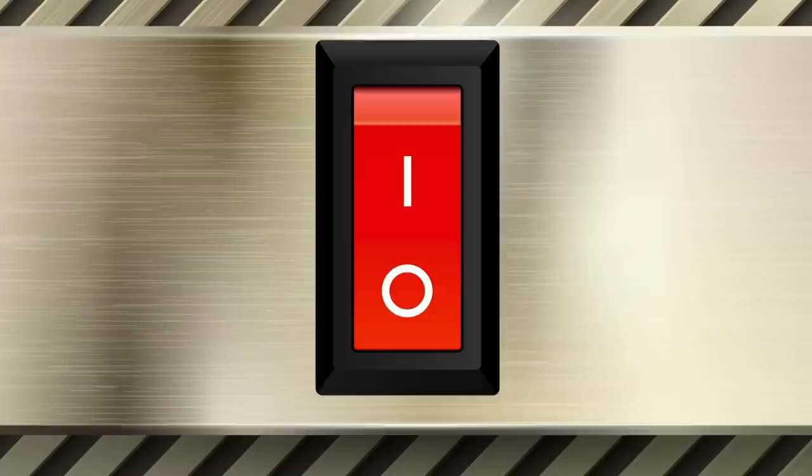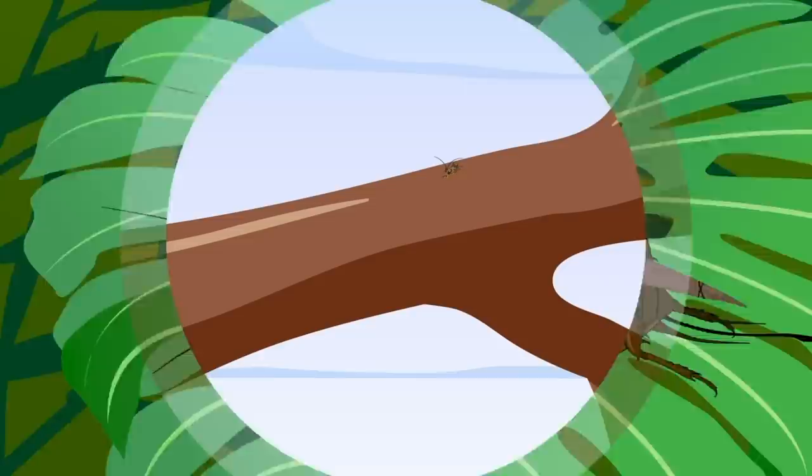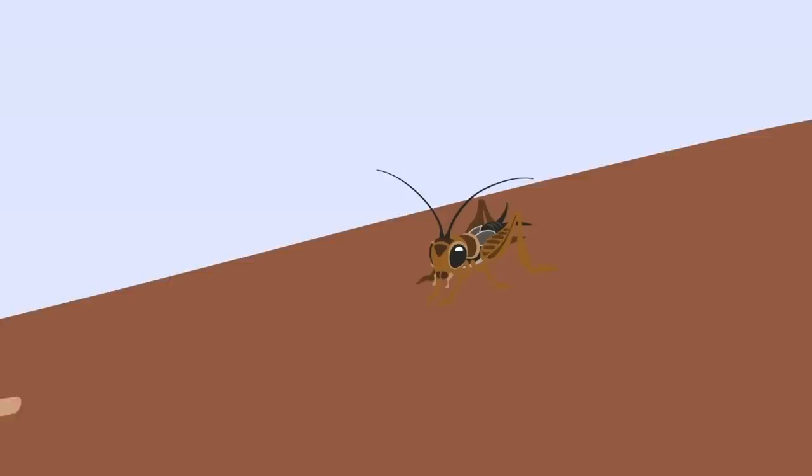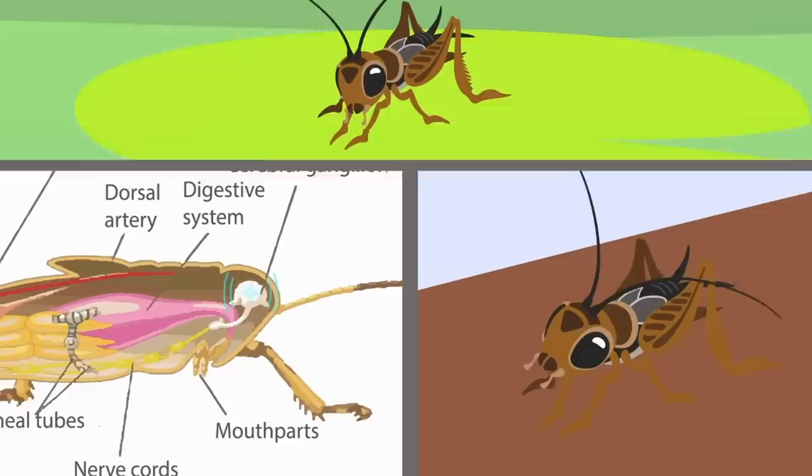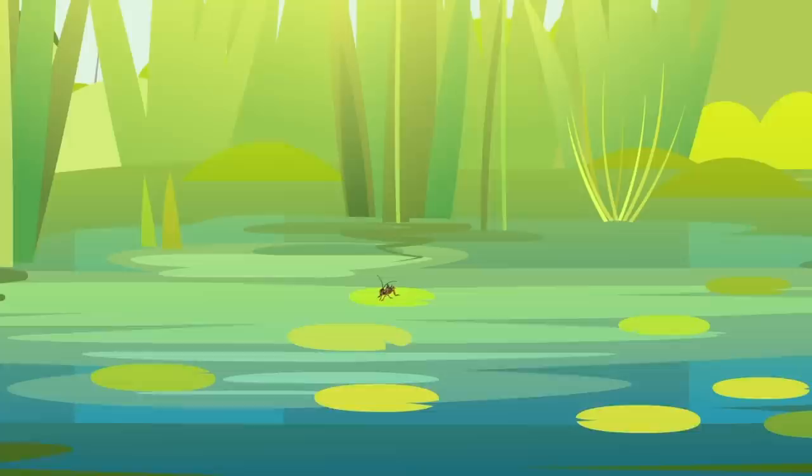As the parasite wraps itself around more and more of the organs within the cricket, it takes its mind-controlling to the next level. A regular cricket will stay far away from running water as it is biologically programmed to know that water contains predators and that it is not the best swimmer. However, the parasite needs to reach the water in order to reproduce, so it sends signals to the cricket's brain that convinces the host that water is exactly what the cricket needs and that there is no danger at all. However, nothing could be further from the truth.